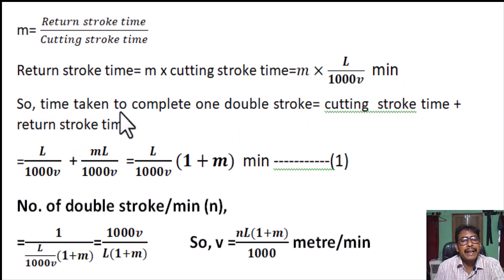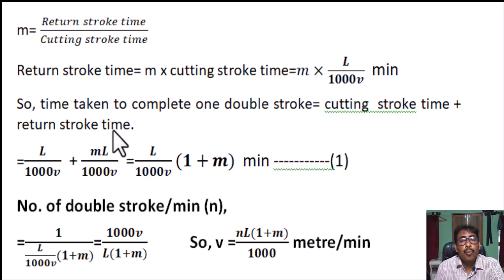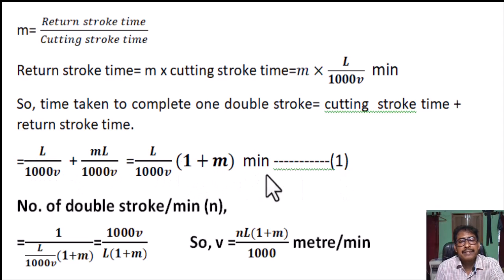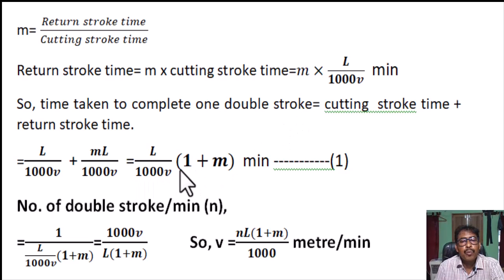Time taken to complete one double stroke equals cutting stroke time plus return stroke time. Total time equals L divided by 1,000 into V, plus M into L divided by 1,000 into V. Taking L divided by 1,000 into V as common, this equals L divided by 1,000 into V, into bracket one plus M minutes. This is Equation 1.